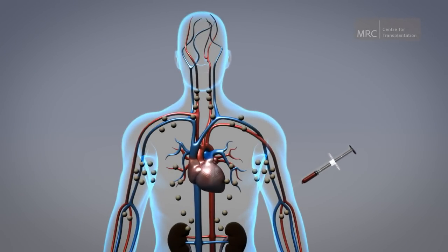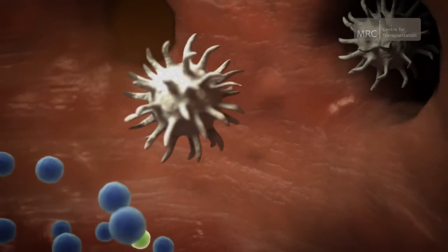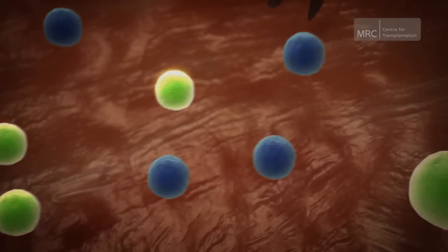And just after the transplant takes place, these regulatory T cells are concentrated and injected back into the body. When dendritic cells from the new kidney enter the lymph node, the T effectors specific for the transplant will be...